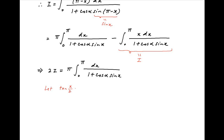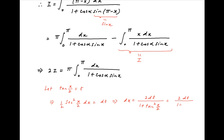Now let tan(x/2) = t. Taking the derivative of both sides, we get (1/2) sec²(x/2) dx = dt, so dx = 2 dt / sec²(x/2) = 2 dt / (1 + tan²(x/2)), and therefore dx = 2 dt / (1 + t²). Also recall that sin(x) = 2 tan(x/2) / (1 + tan²(x/2)) = 2t / (1 + t²).